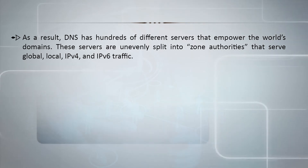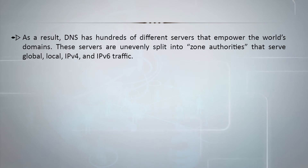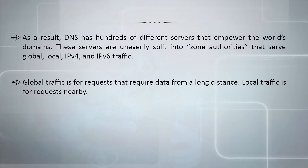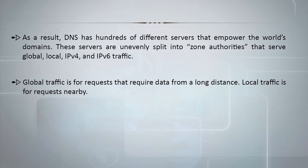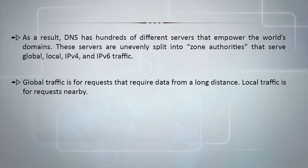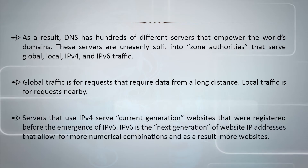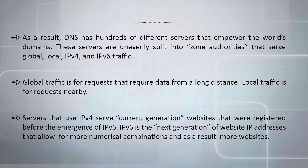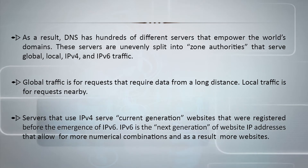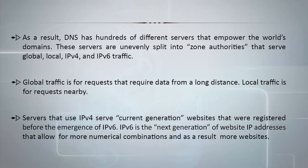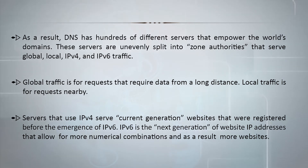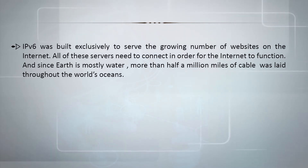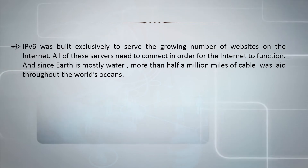The Domain Naming System has hundreds of different servers that empower the world's domains. These servers are unevenly split into zonal authorities that serve global, local, IPv4, and IPv6 traffic. Global traffic is for requests that require data from a long distance, while local traffic is for nearby requests. Servers that use IPv4 serve current generation websites registered before the emergence of IPv6. IPv6 is the next generation of website IP addresses, allowing for more numerical combinations and therefore more websites. IPv6 was built exclusively to serve the growing number of websites on the internet.